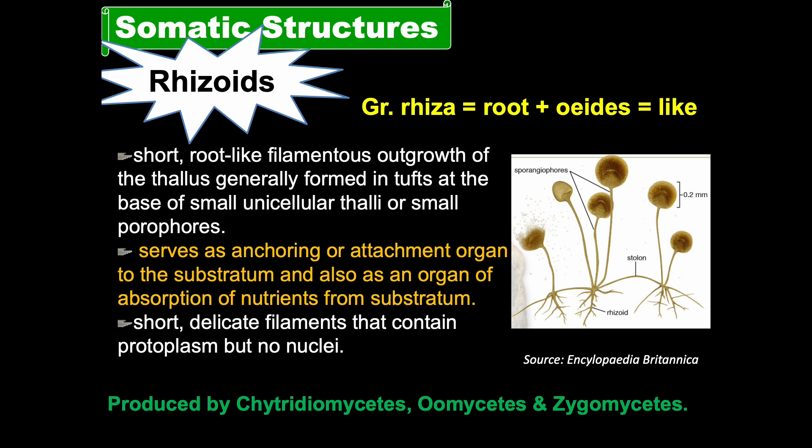The first somatic structure is the rhizoid. The word rhizoid came from two Greek words: 'rhizo' meaning root, and 'oides' meaning like — so rhizoid means root-like structures. These are short root-like filamentous outgrowths of the thallus, generally formed in tufts at the base of small unicellular thalli. Rhizoids serve as anchoring and attachment organs to the substratum.